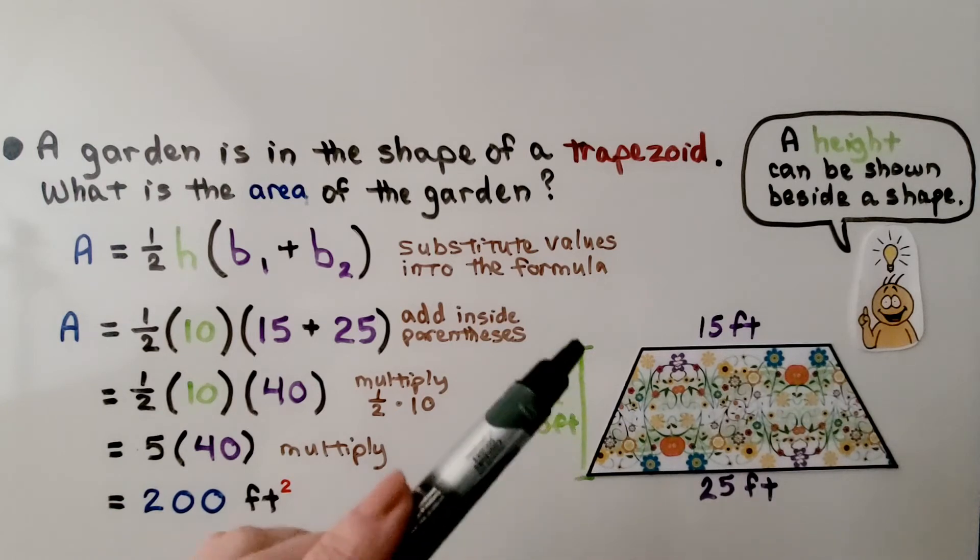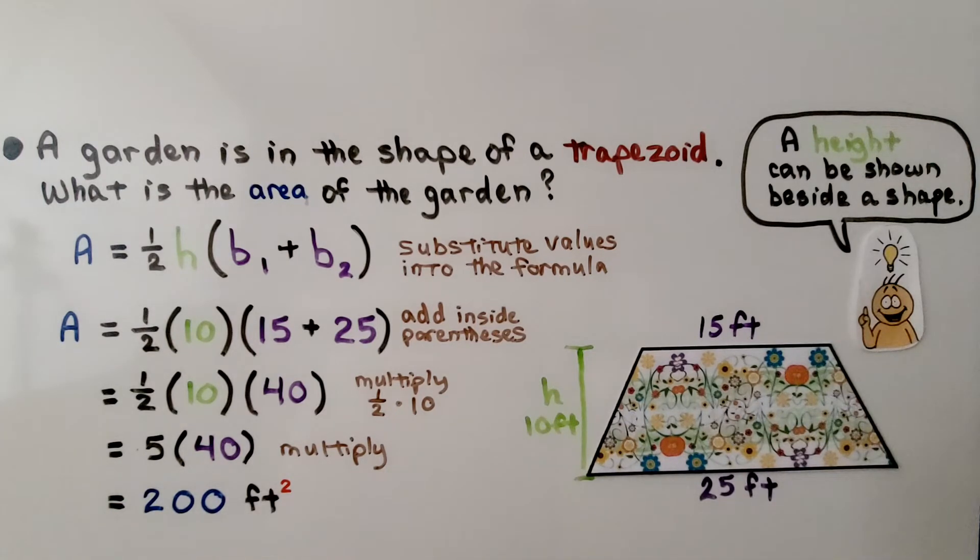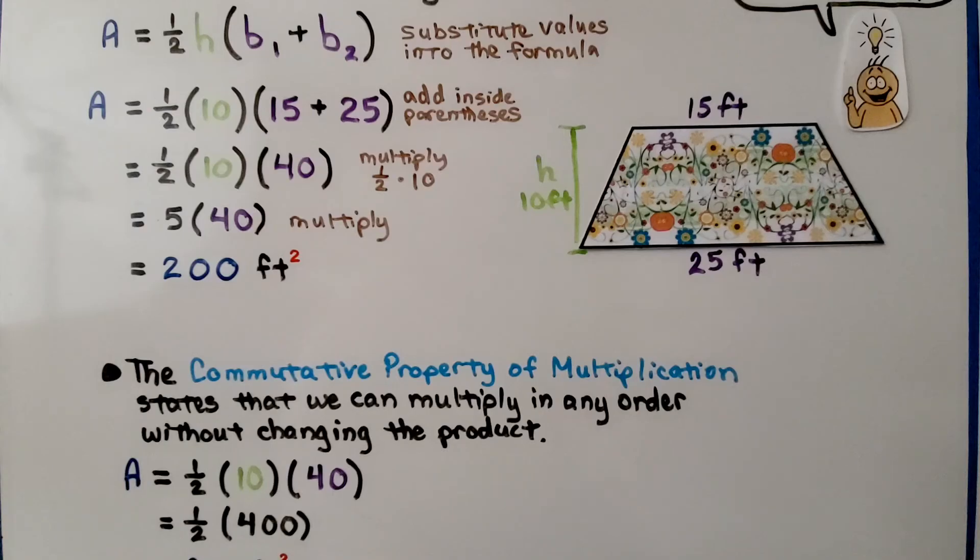A height can be shown on the outside or beside a shape. Now when we solve this, we multiply half times 10 to get the 5.